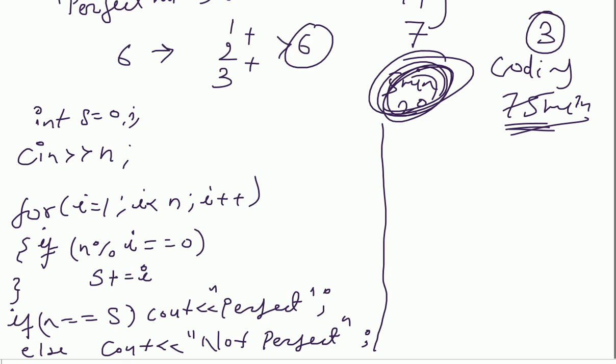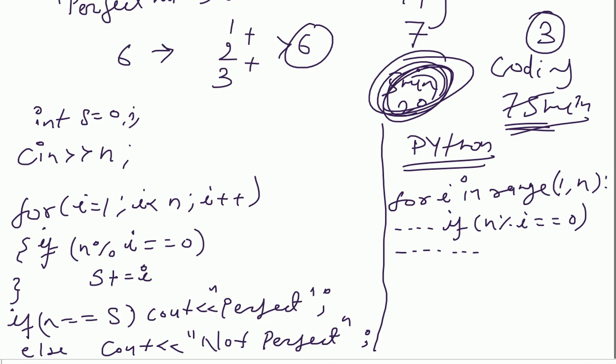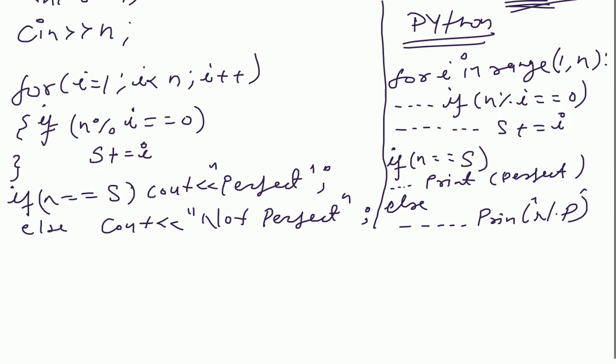In Python, take n equal to input. For i in range 1 to n, put a condition: if n percent i equal to equal to zero, s plus equal to i. Now we just put a condition after the for loop: if n equal to equal to s, in this condition you can print perfect, else you can print not perfect. I hope this question is clear.